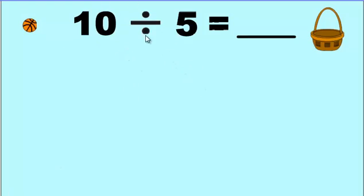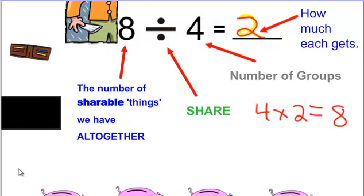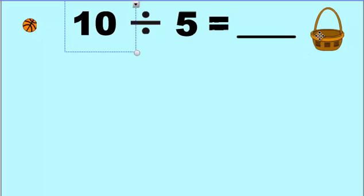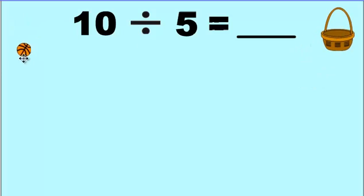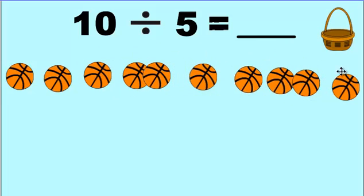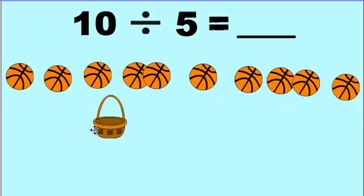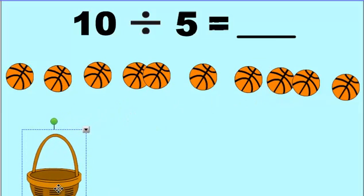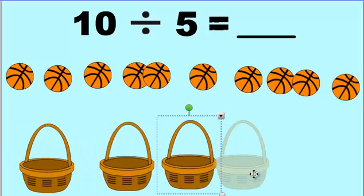Let's look at 10 divided by 5. Would it make more sense to say we need ten basketballs or ten baskets? Remember, the first number is how many shareable things we have. Do the balls go in the basket, or do baskets go in the ball? We're going to need ten basketballs — that makes the most sense. So: 1, 2, 3, 4, 5, 6, 7, 8, 9, 10. And I'm going to share among five groups, so I need five baskets.